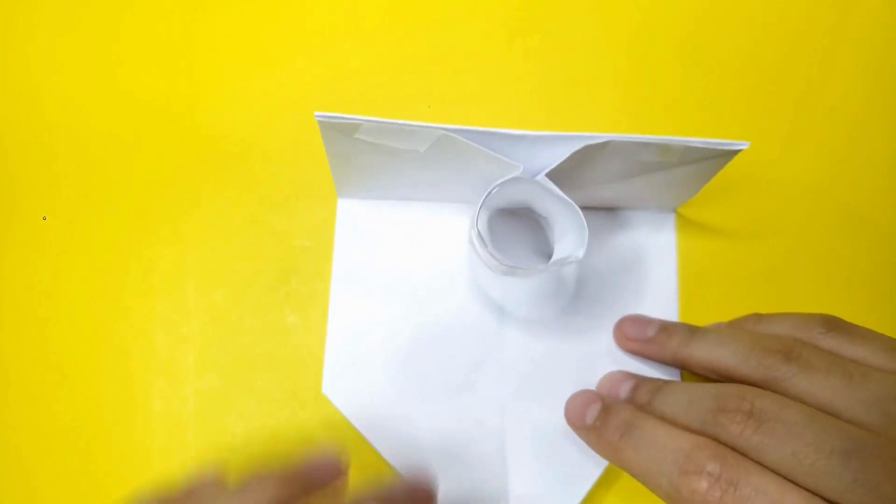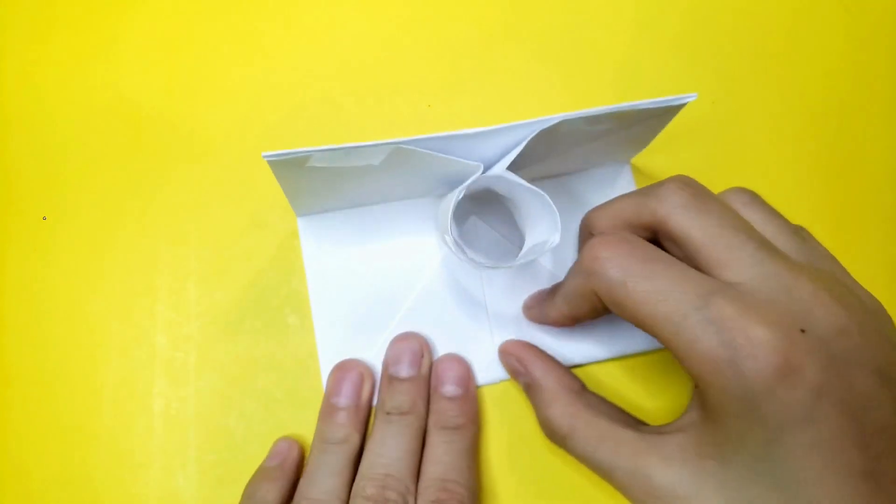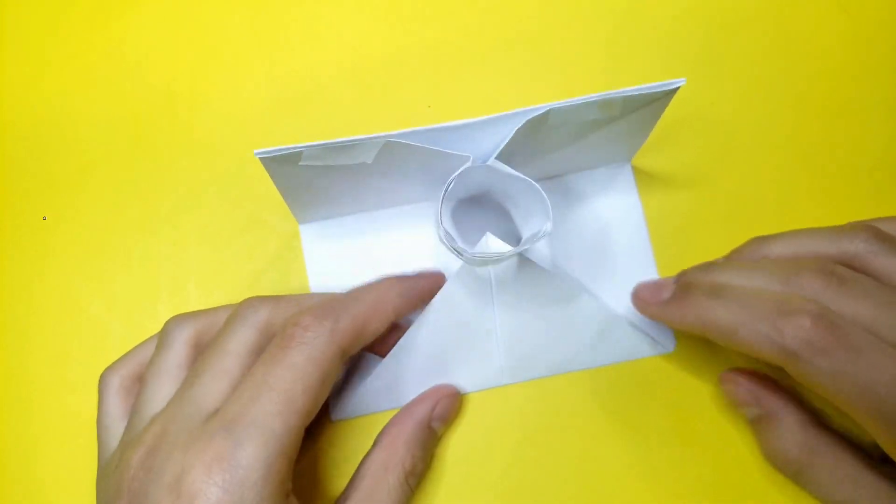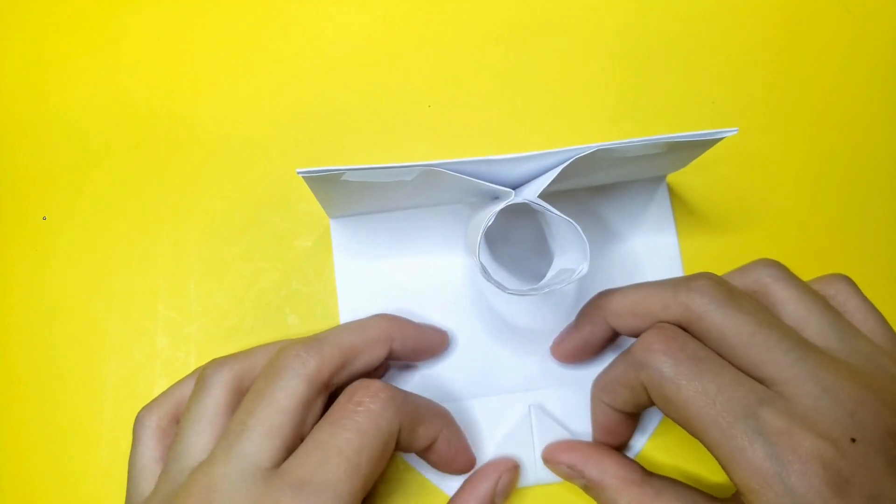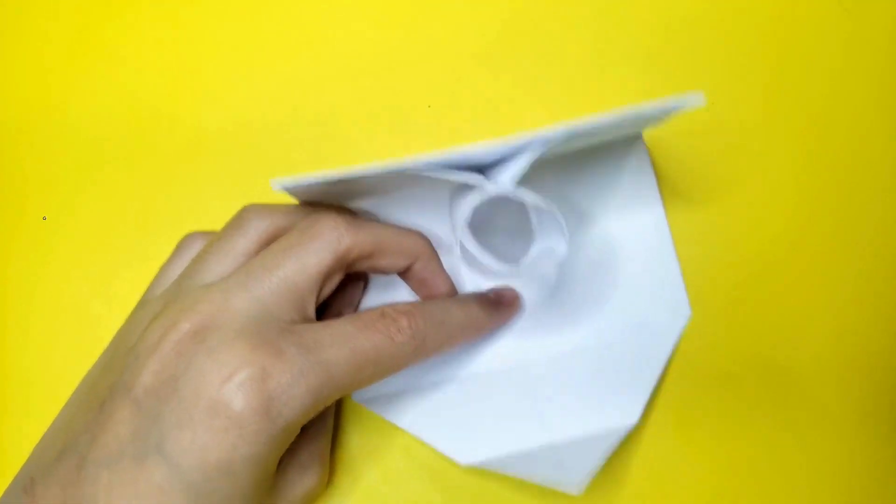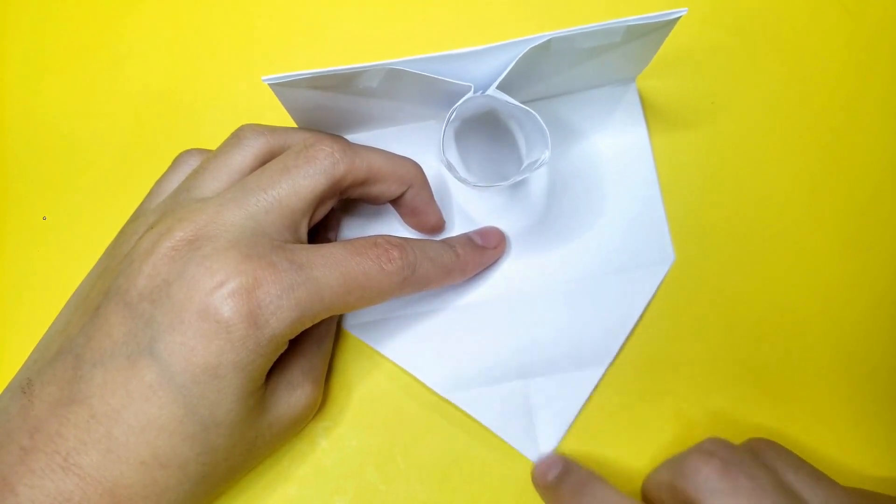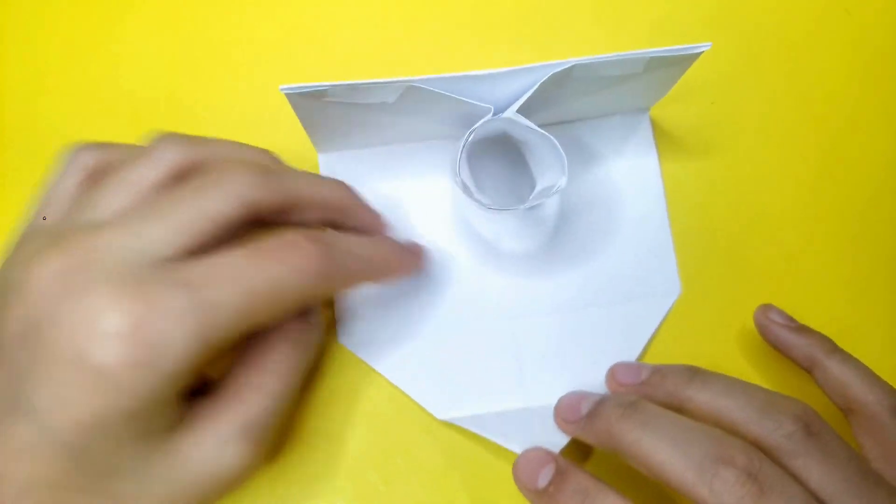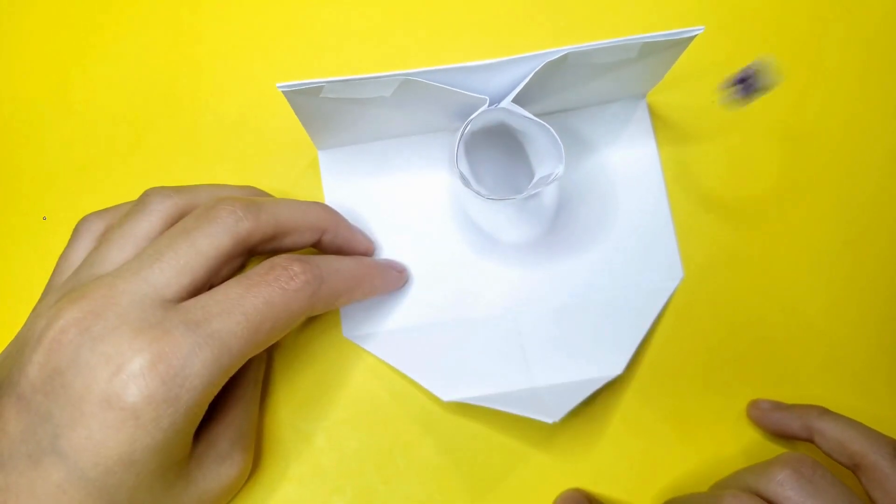Now fold on this triangle and fold it right here. Make sure it works before you shoot—make sure it flicks up like that. If it flicks up, then you're ready to shoot.